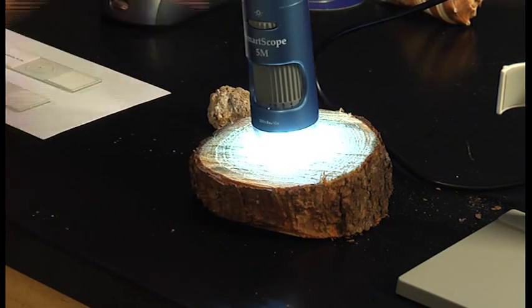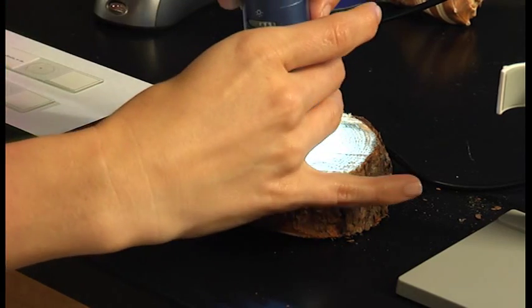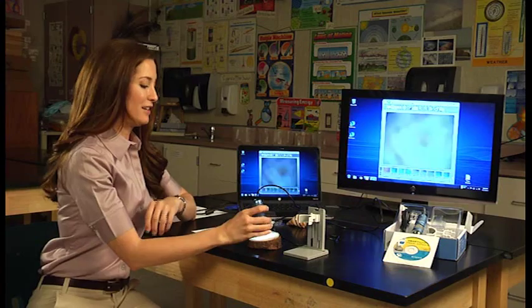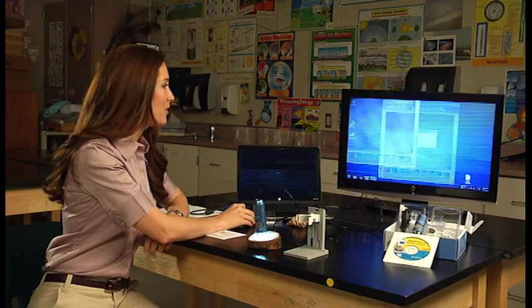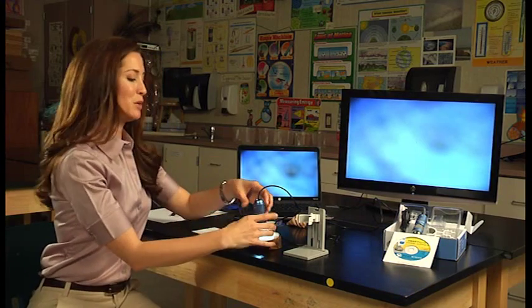You can analyze things with the SmartScope 5M that you would never be able to look at with a regular microscope. I'm going to go back into full screen mode and take a look at this wood block. Again, you're going to want to make sure that your focus dial is turned all the way to the right.